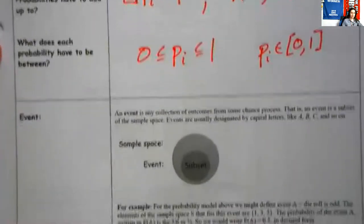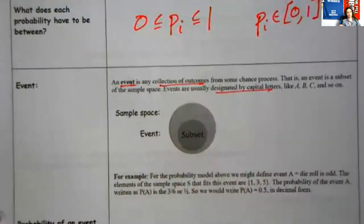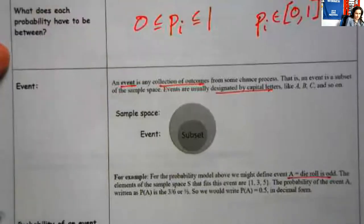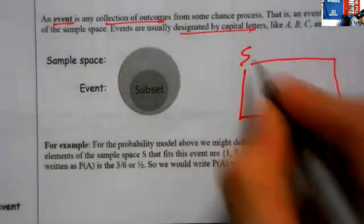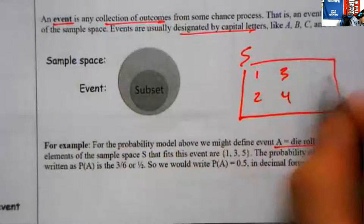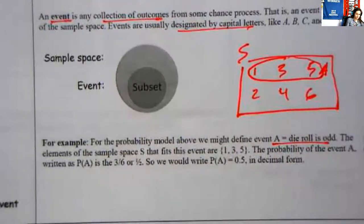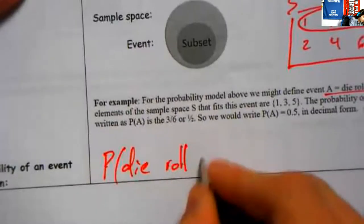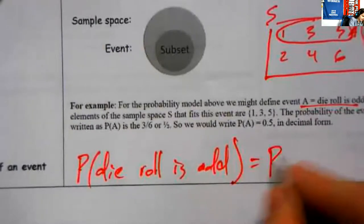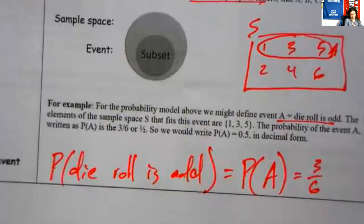We're going to talk about probabilities of events. These events are a collection of outcomes, and they're usually designated by capital letters. So we might have event A: the die roll is odd. If the sample space is {1, 2, 3, 4, 5, 6}, then within here we might have A — the event of being odd. We write it as: probability the die roll is odd. We can do it in words or in letters if we've defined the event with a capital letter. We happen to know it's three out of six, or one-half, or 0.5.